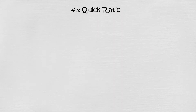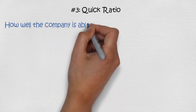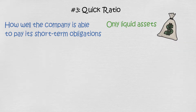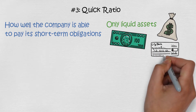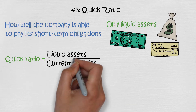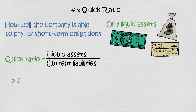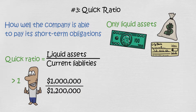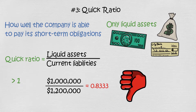Financial ratio number 3: quick ratio. The quick ratio tells how well a company is able to pay its short-term obligations. Because it's used for the short term, it uses only liquid assets — meaning assets easily converted into cash — such as cash and cash equivalents, marketable securities, and accounts receivable. When we divide these assets by current liabilities, we get the quick ratio. If it's over 1, that's a good sign. For example, if liquid assets are $1 million and current liabilities are $1.2 million, the quick ratio is 0.8333, meaning we cannot pay back current liabilities — which is usually a bad thing.